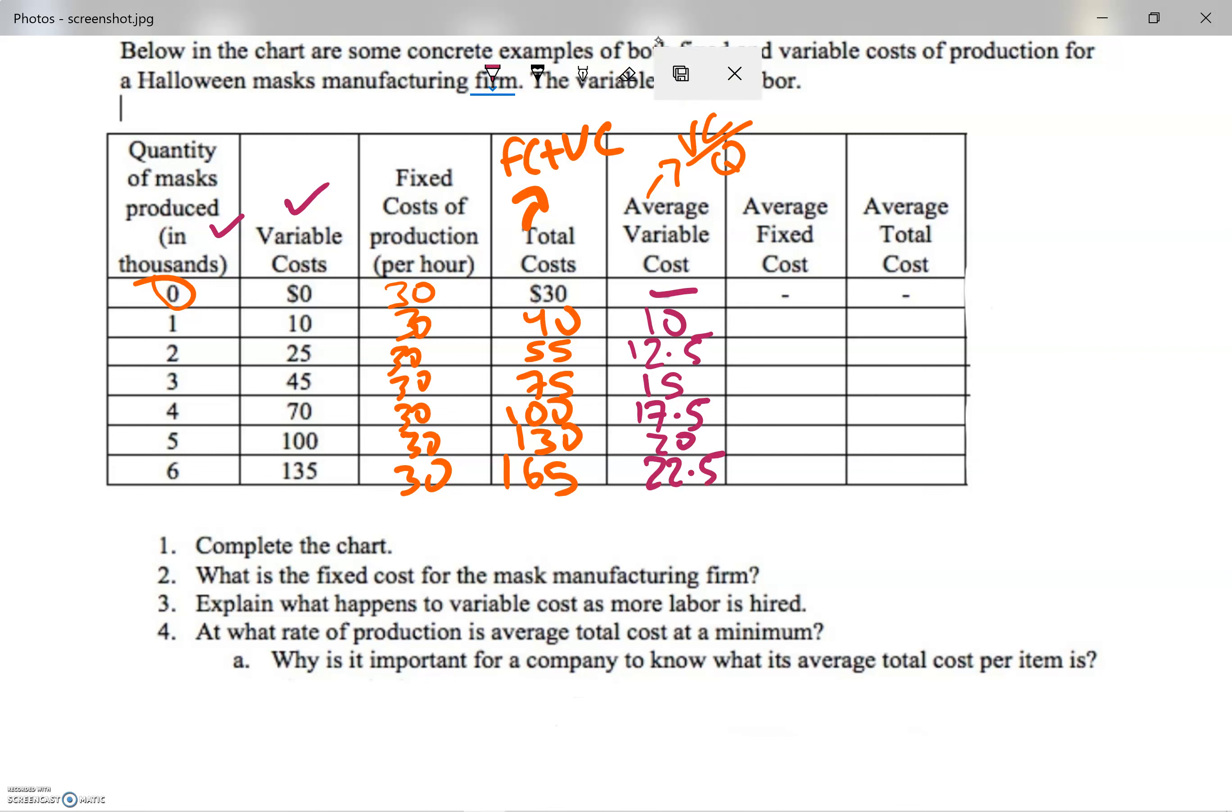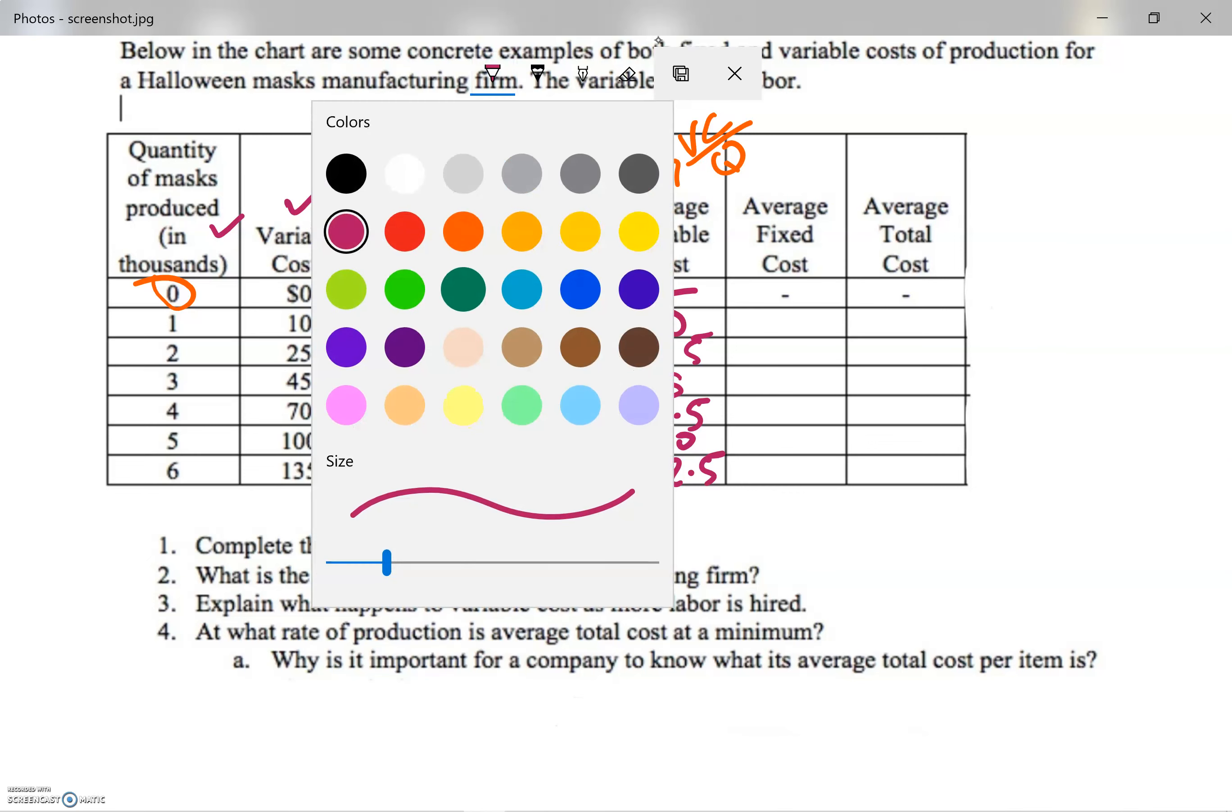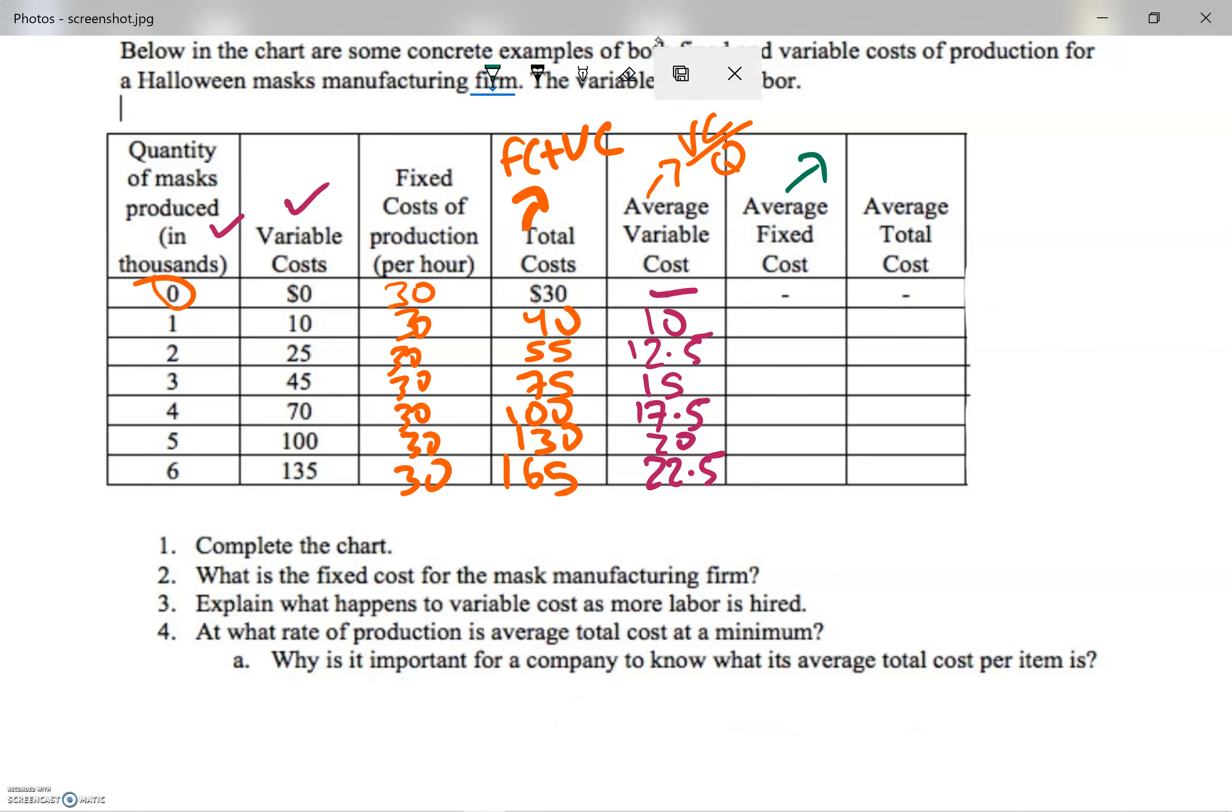Average fixed cost - it would be fixed cost divided by quantity. So I need to look at this column and this column. 30 divided by 0 - impossible. 30 divided by 1 is 30. 30 divided by 2 is 15, and so on: 10, 7.5, 6, and 5.